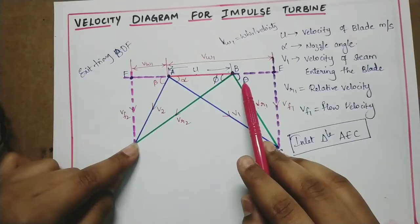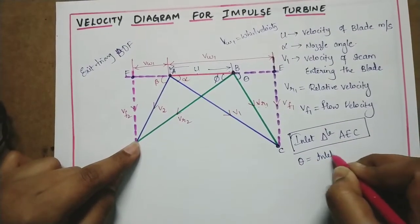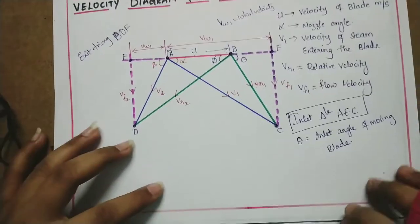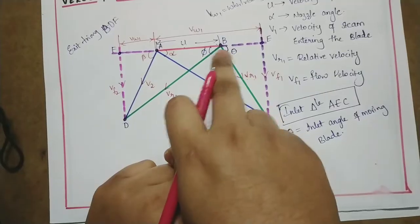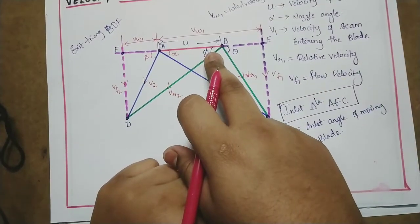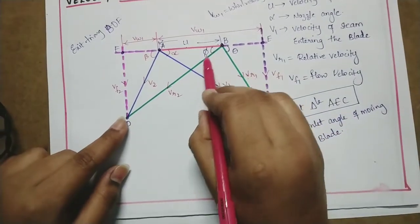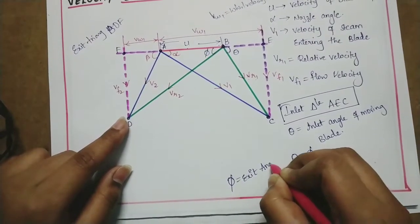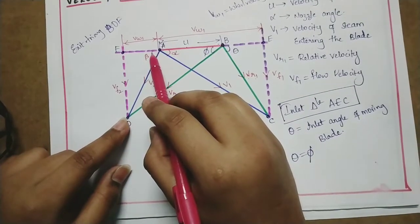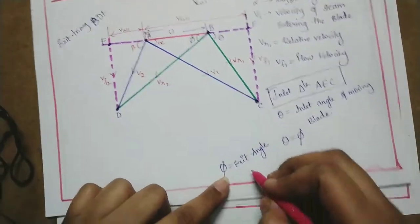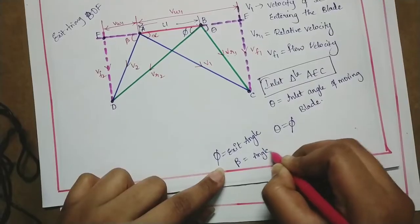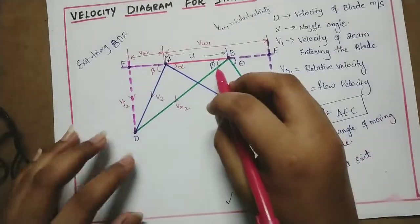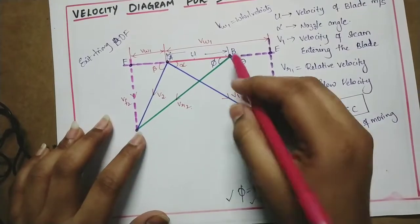Now the internal notation: theta is the inlet angle, inlet angle of moving blade. In impulse turbine, inlet angle equals phi, which is the exit angle. Phi is the exit angle.